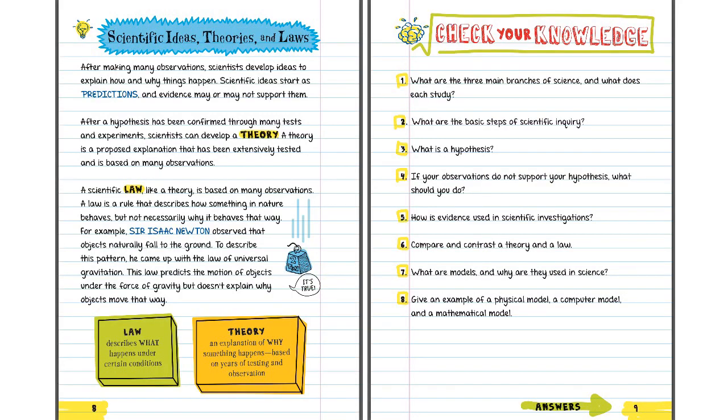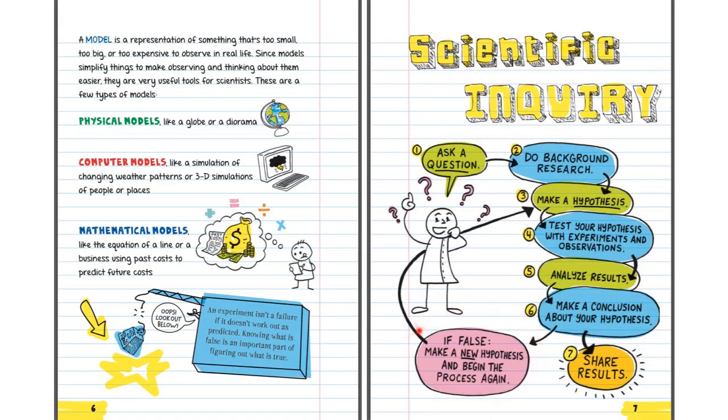Number four. If your observations do not support your hypothesis, what should you do? Look. Right here it is. If it's false, make a new hypothesis and begin the process again.